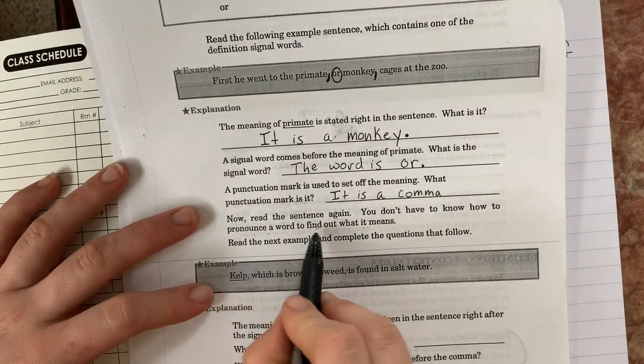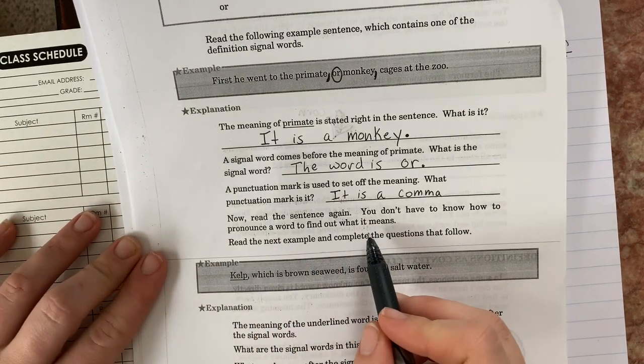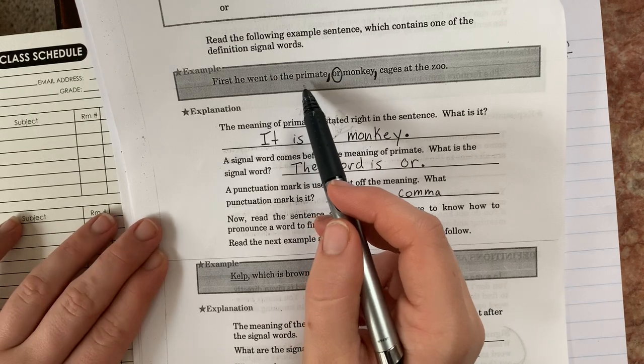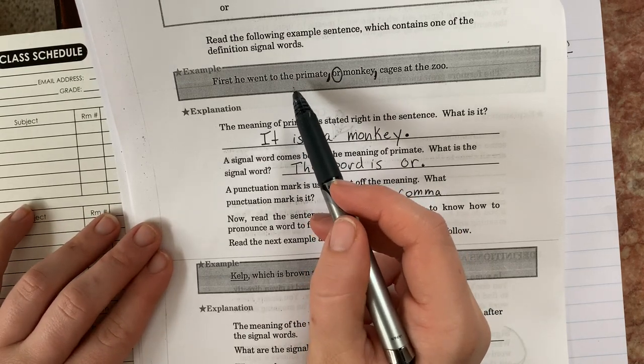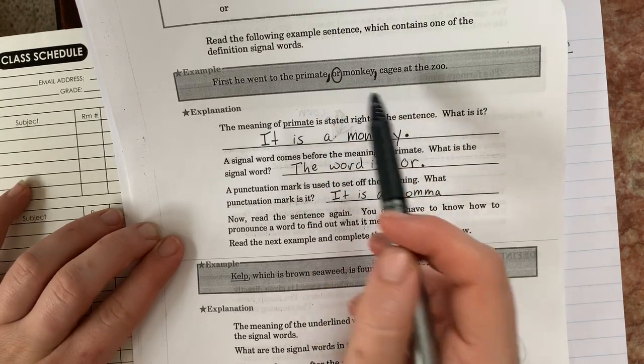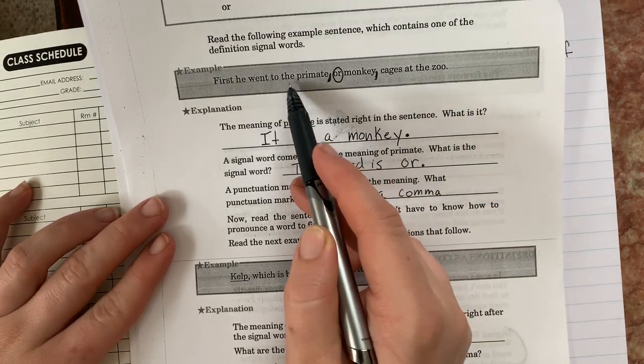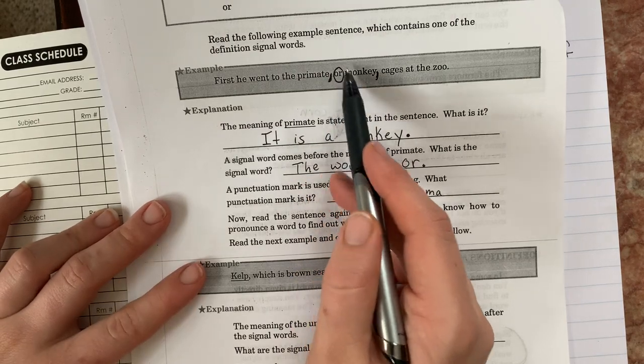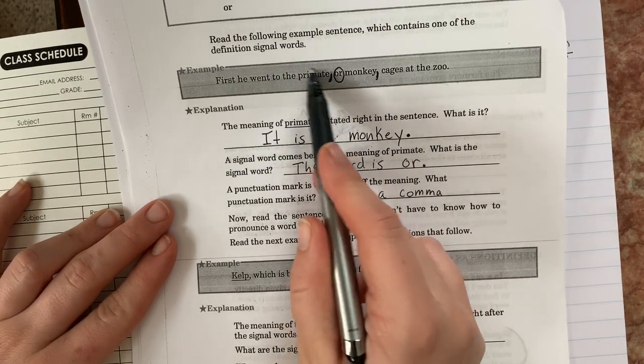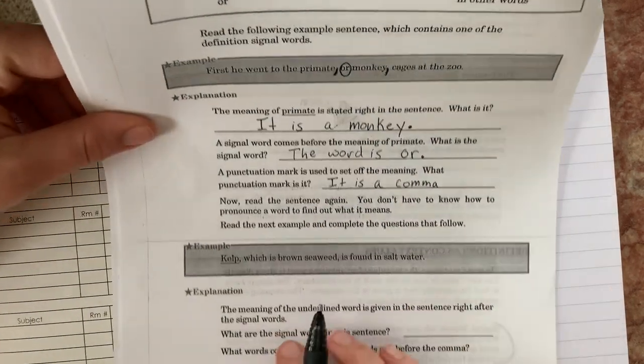All right. Now, read the sentence again. You don't have to know how to pronounce a word to find out what it means. Well, let's make sure that's true. So, first, he went to the, maybe I don't know how to read this, primate, primate, or monkey, cages at the zoo, right? So even if I don't know how to sound out this word, if I don't know what it means, I can still guess using the or and this word right here, monkey, that this word primate or maybe primate if I can't read it, this word means monkey.